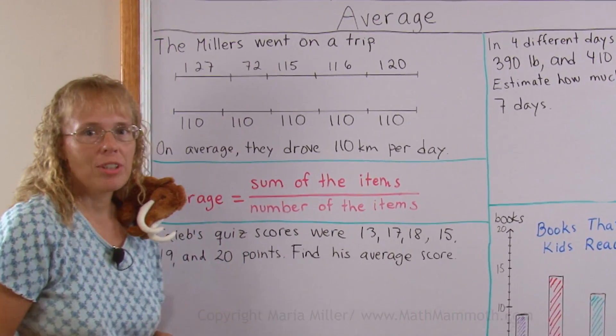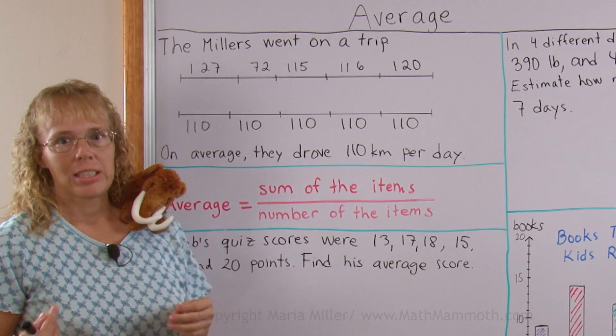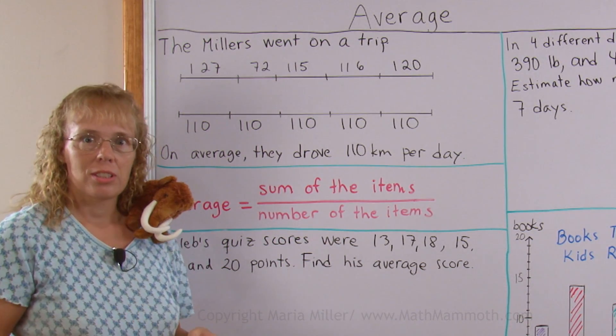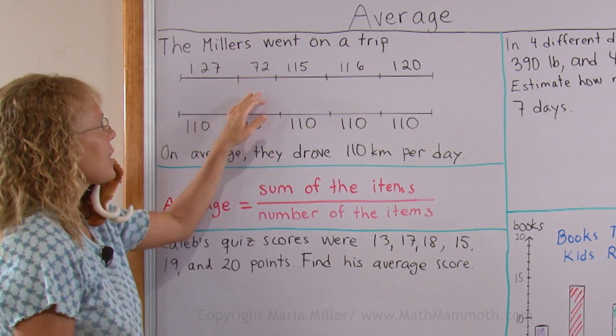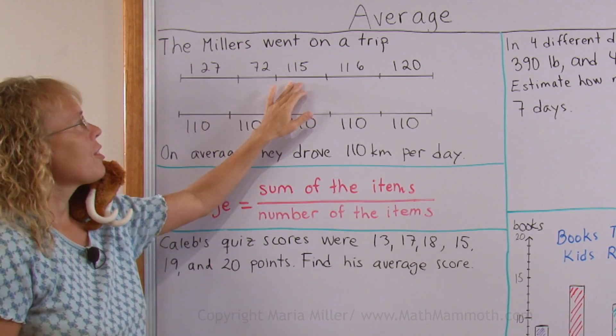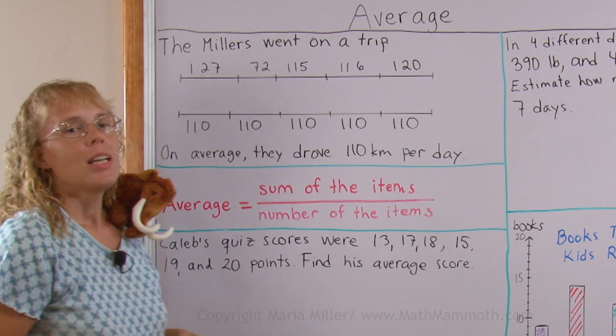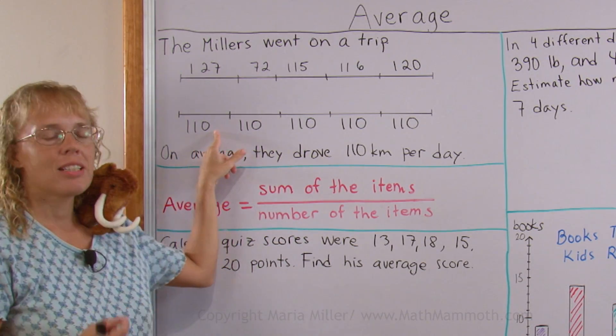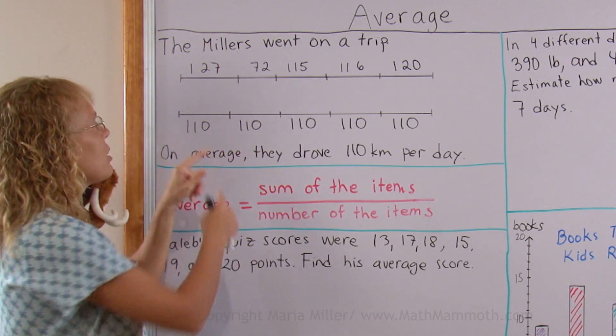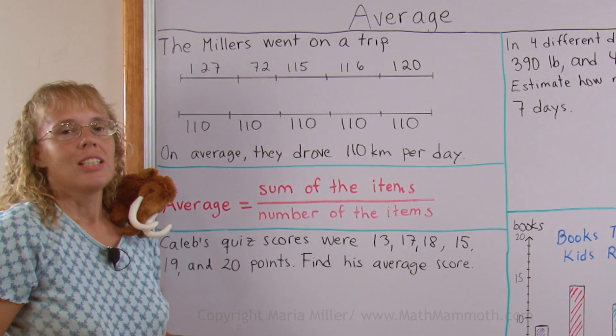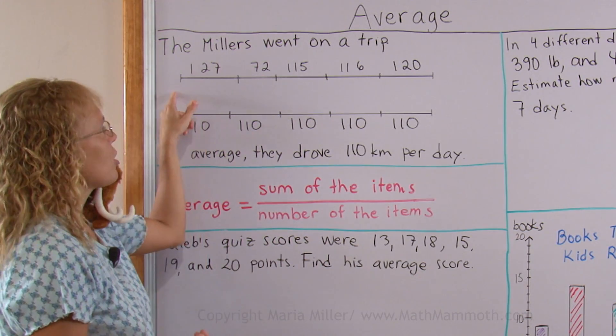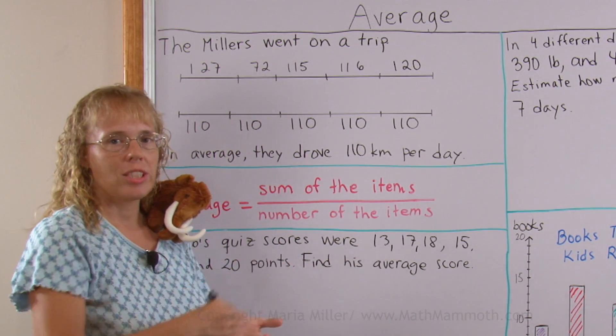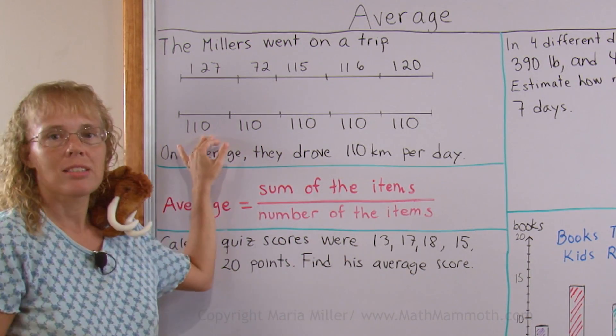Now let's look at an example first. Let's say the Miller family went on a trip and the first day they drove 127 kilometers. Or you can think of miles if you prefer. The next day they drove 72 kilometers, third day 115 and so on. Now, if each day they had driven 110 kilometers then they would have driven the same total amount of 550 kilometers. Their trip was a total 550 kilometers and so if that was divided evenly into each day then each day they would have driven 110 kilometers.